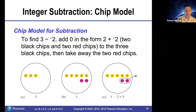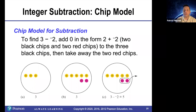Here's a representation of three. This is also a representation of three because these four chips cancel each other out, so it doesn't change the value. And now I can take away negative two by removing the two red chips. That leaves me with five yellow chips.